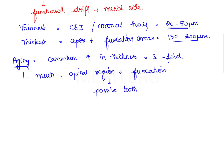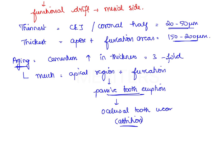In passive tooth eruption, eruption is compensated by apical deposition of cementum. Cementum is deposited in the apical region and at the furcation level to compensate for passive tooth eruption, which itself compensates for occlusal tooth wear — that is, attrition. Cementum is deposited in the apical third and furcation areas because anchorage is an important function of cementum.